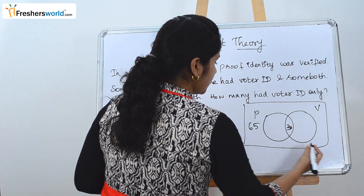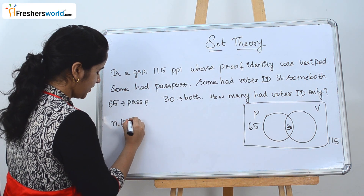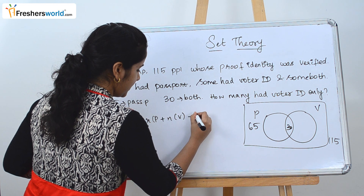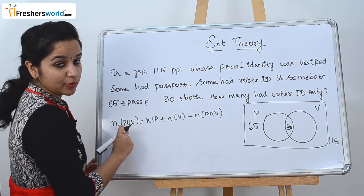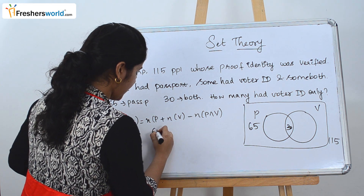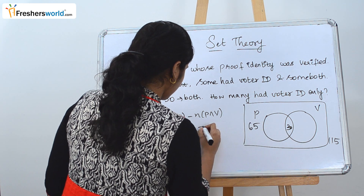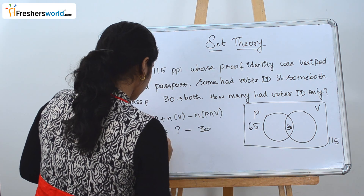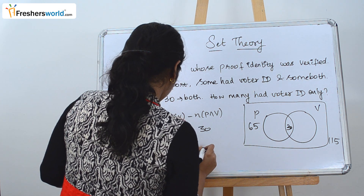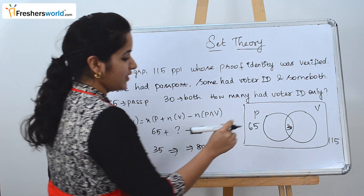The total number of people surveyed is 115. Using the formula: N(P ∪ V) = N(P) + N(V) − N(P ∩ V). We know N(P ∪ V) = 115, N(P) = 65, and N(P ∩ V) = 30. Solving: 115 = 65 + N(V) − 30, so N(V) = 115 − 65 + 30 = 80.